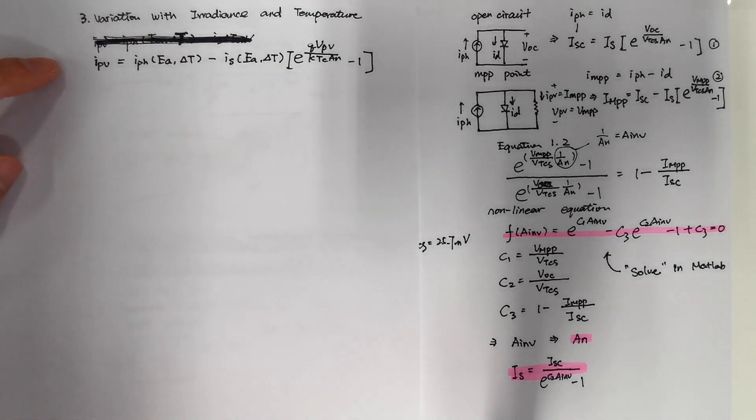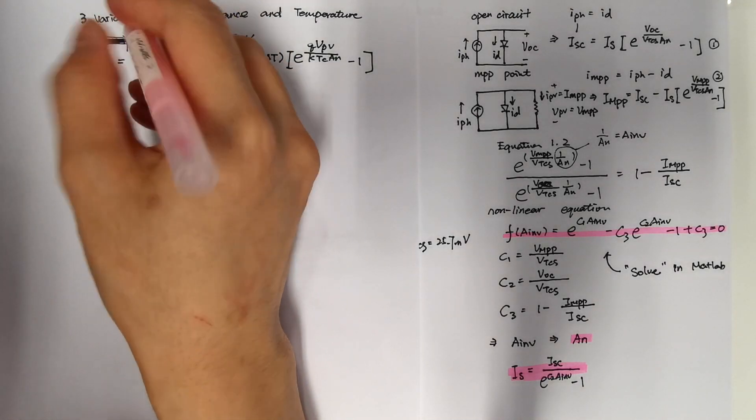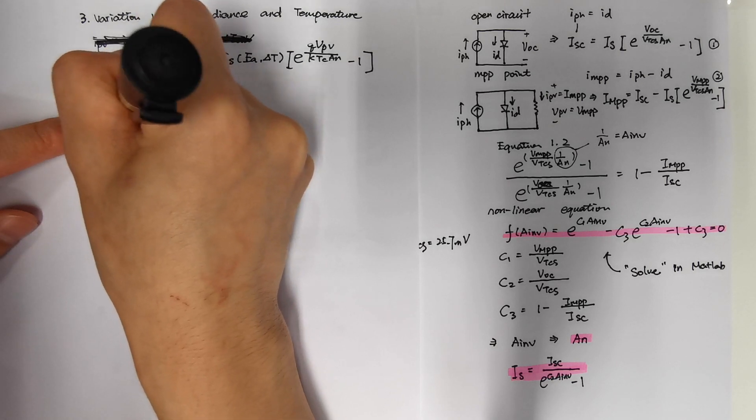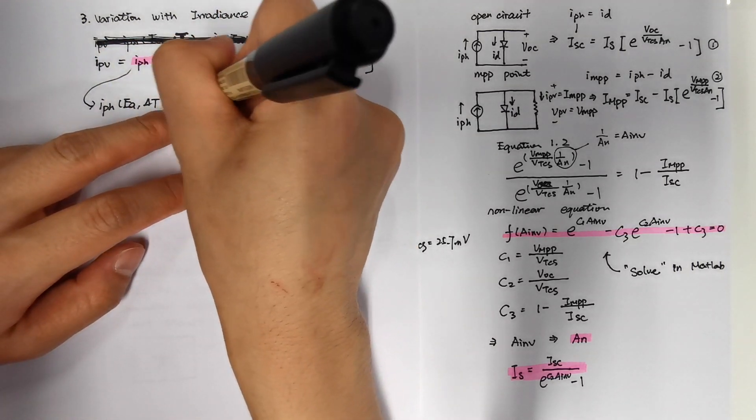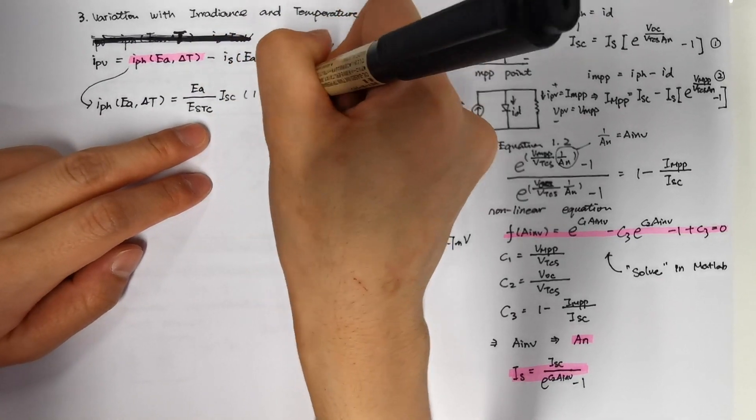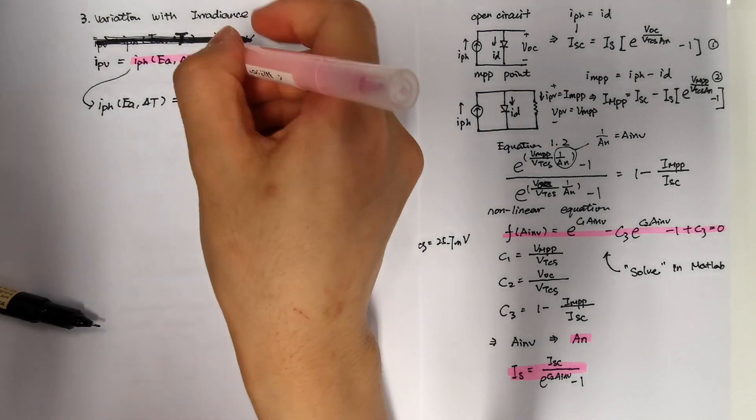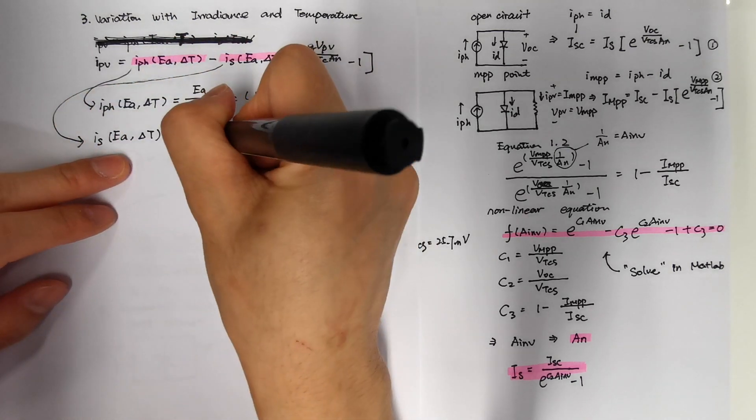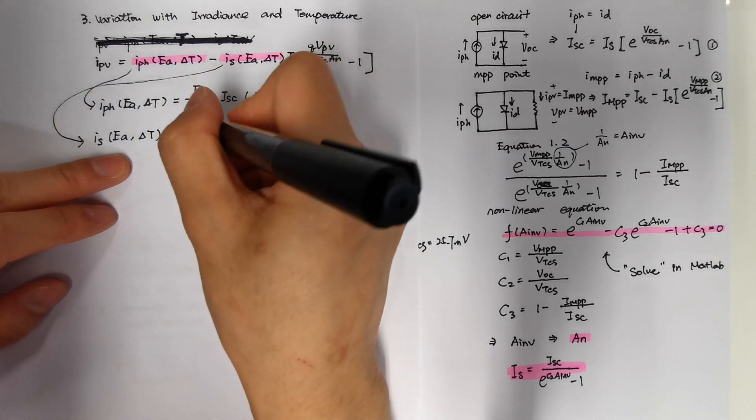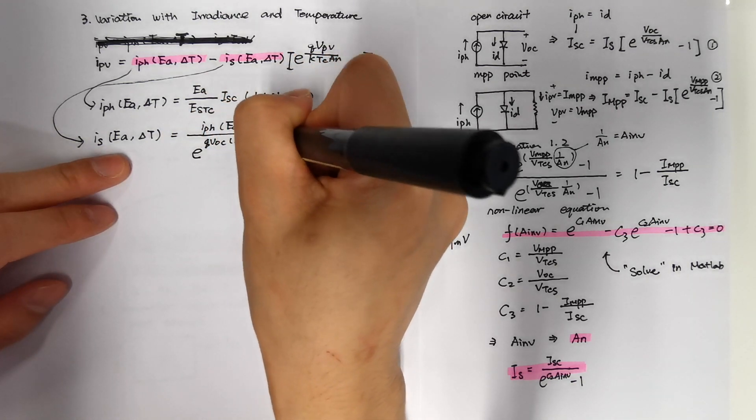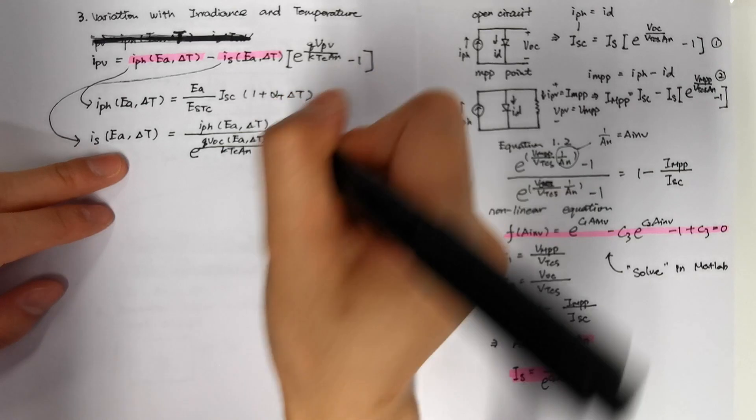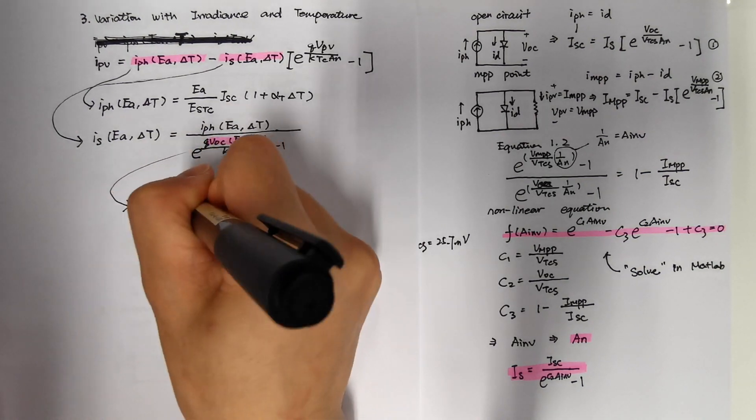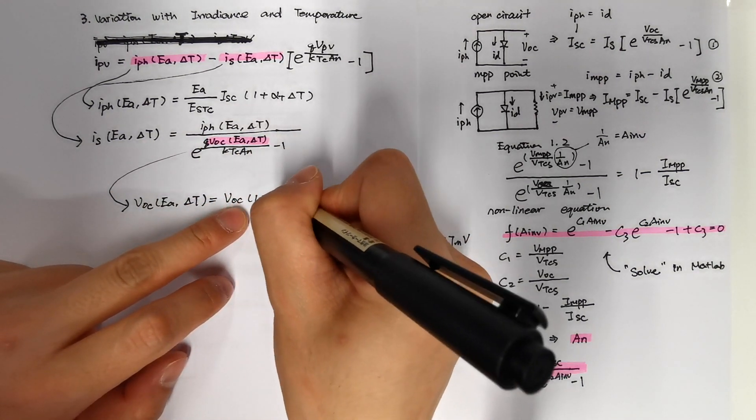So the main equation is IPV equals to IPH related to EA and delta T minus IS related to EA and delta T, still times e to the power of q times VPV divided by k times TC times AN minus 1. And our IPH equation is EA divided by ESTC times ISC times 1 plus alpha T times delta T. And our IS equation is IPH equation divided by e to the power of q times VOC related to EA and delta T divided by k times TC times AN minus 1. And our VOC equation is VOC times 1 plus beta T times delta T.